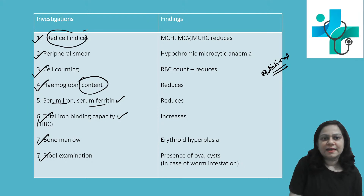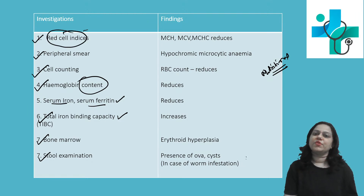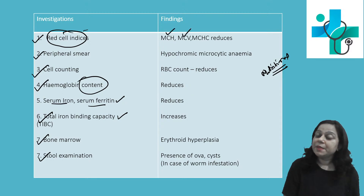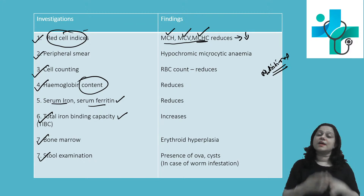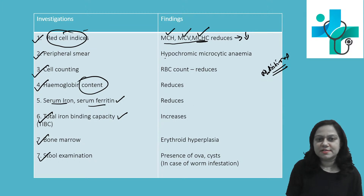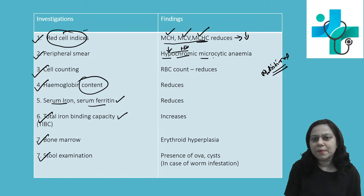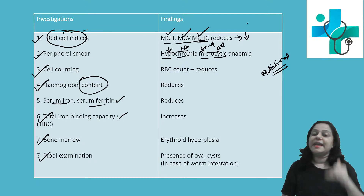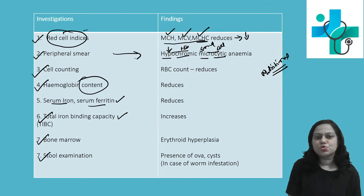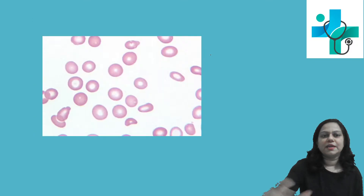If we look at red cell indices — mean corpuscular hemoglobin, mean corpuscular volume, and mean corpuscular hemoglobin concentration — all of these are reduced. Iron deficiency causes hypochromic microcytic anemia: 'hypo' means decrease, 'chromic' refers to hemoglobin, and 'microcytic' means the cells are smaller in size. So there is decreased hemoglobin content and smaller red blood cells.